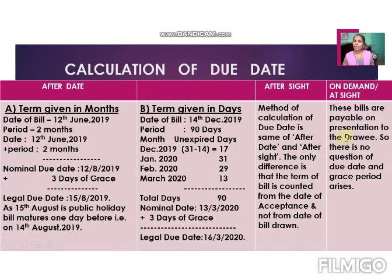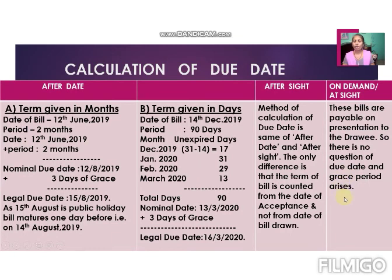The last type is on demand or at sight bills. These bills are payable on presentation to the drawee, so there is no question of due date and no grace period is given. Whenever the drawer presents the bill, the drawee has to make payment at that time only. In the next video we will discuss the various types of bills of exchange. Thank you.